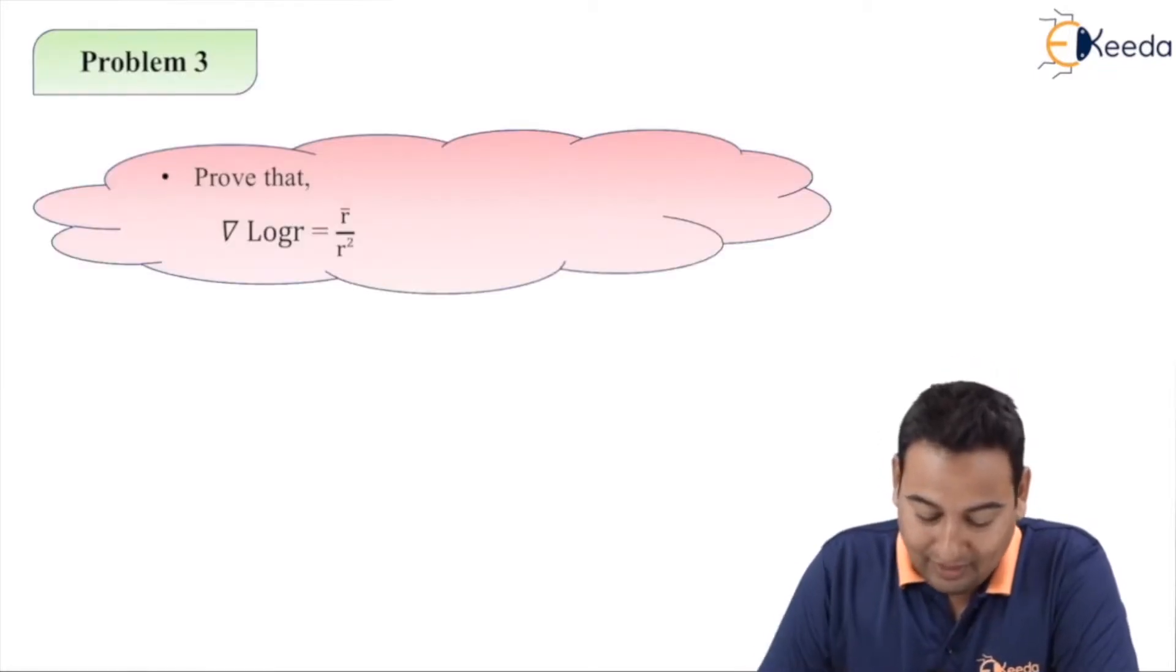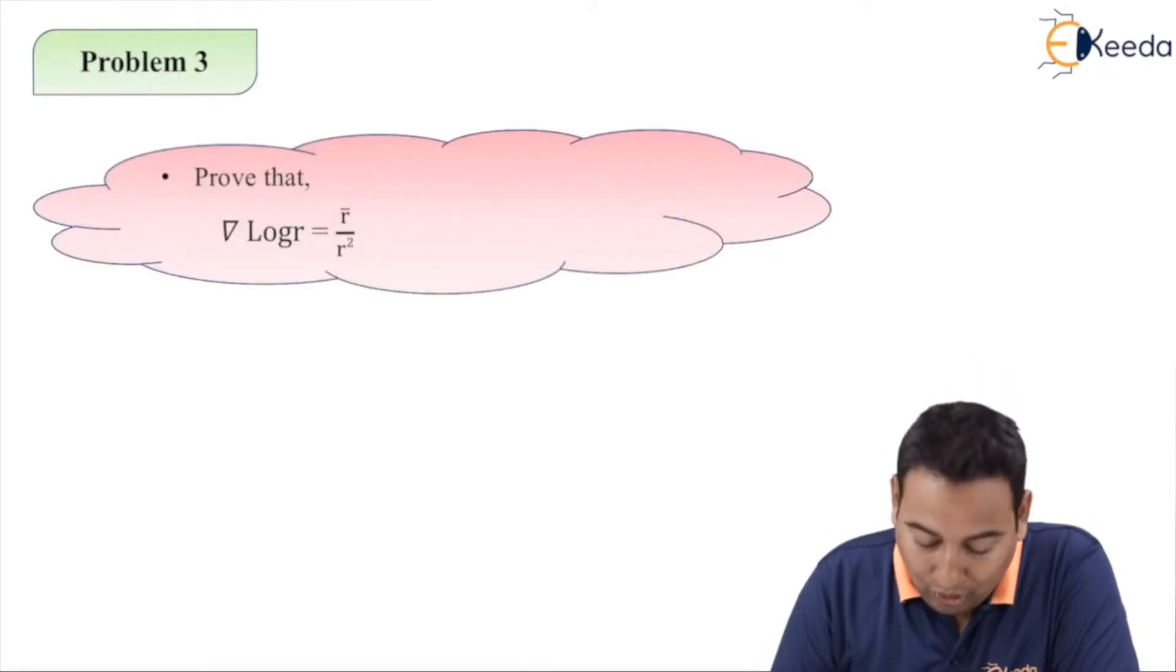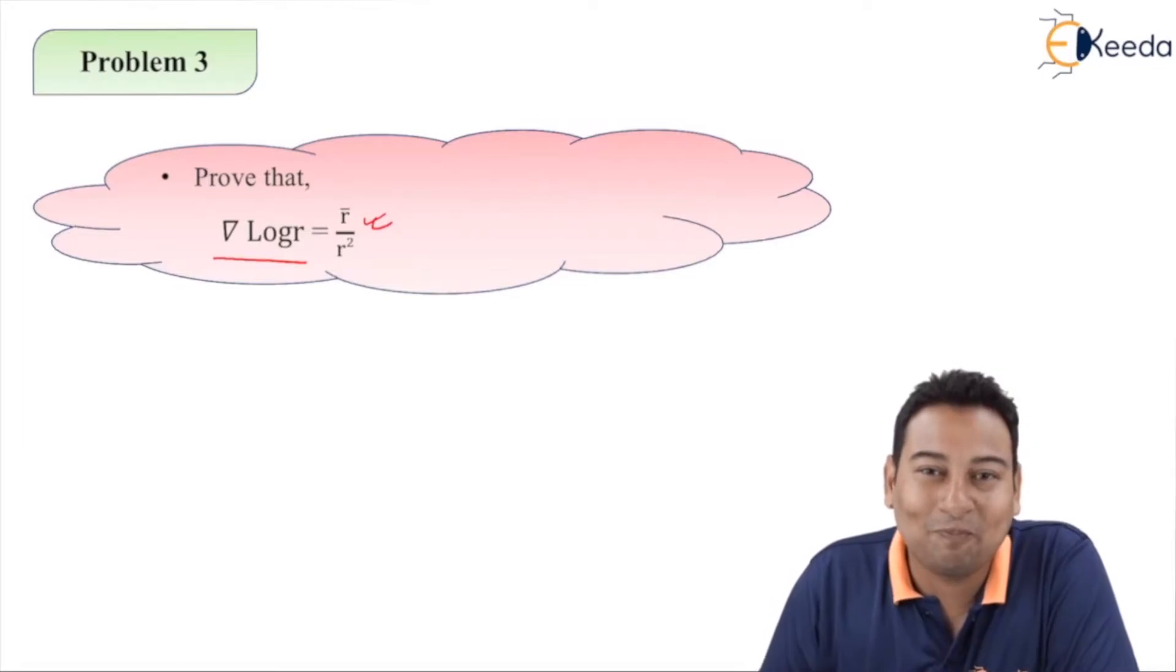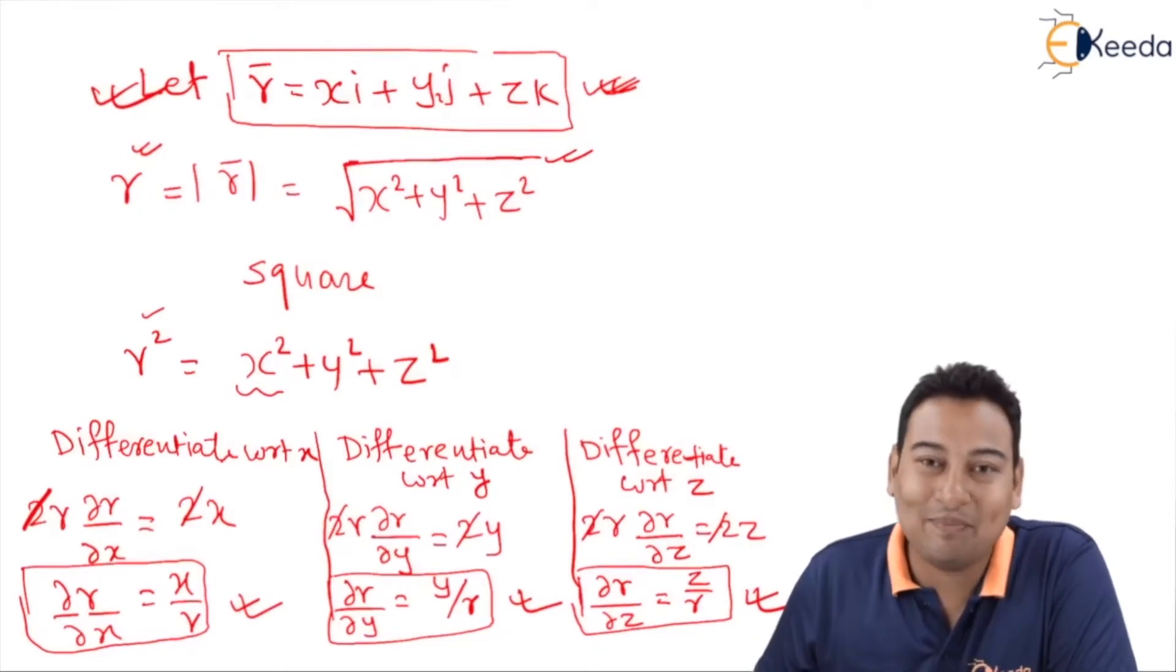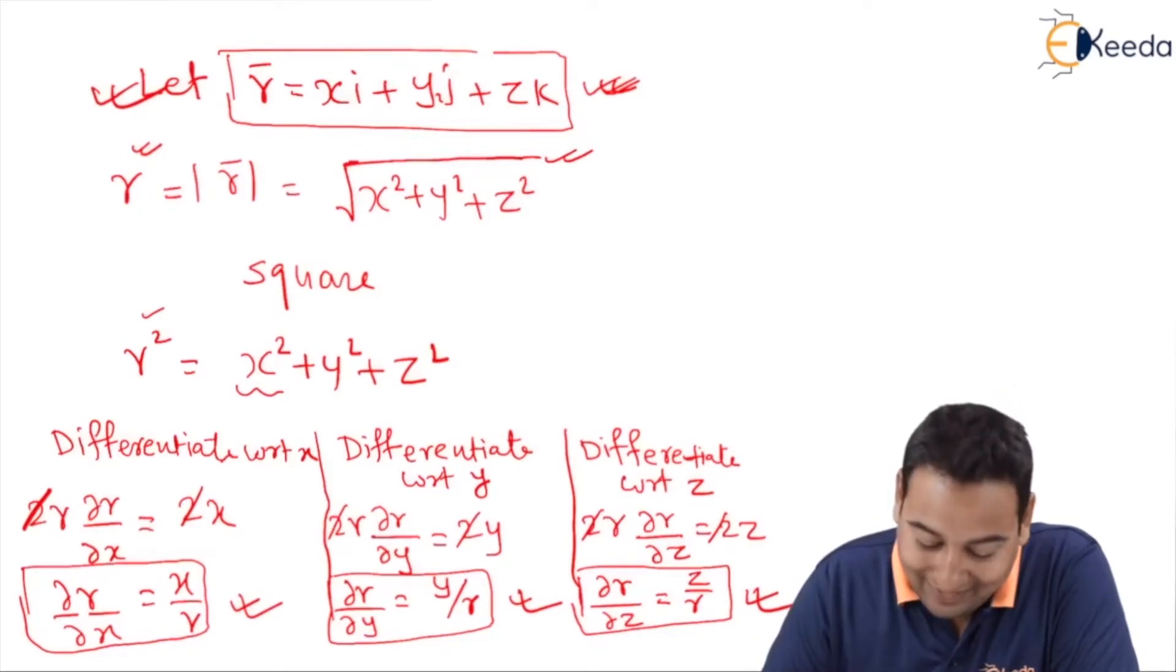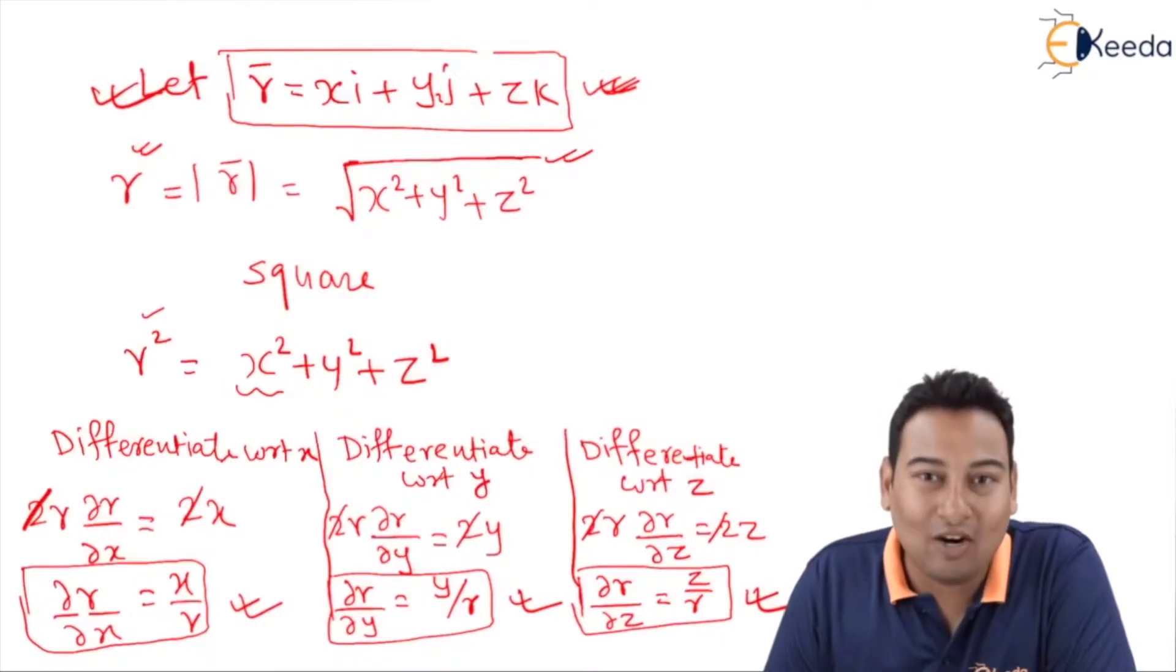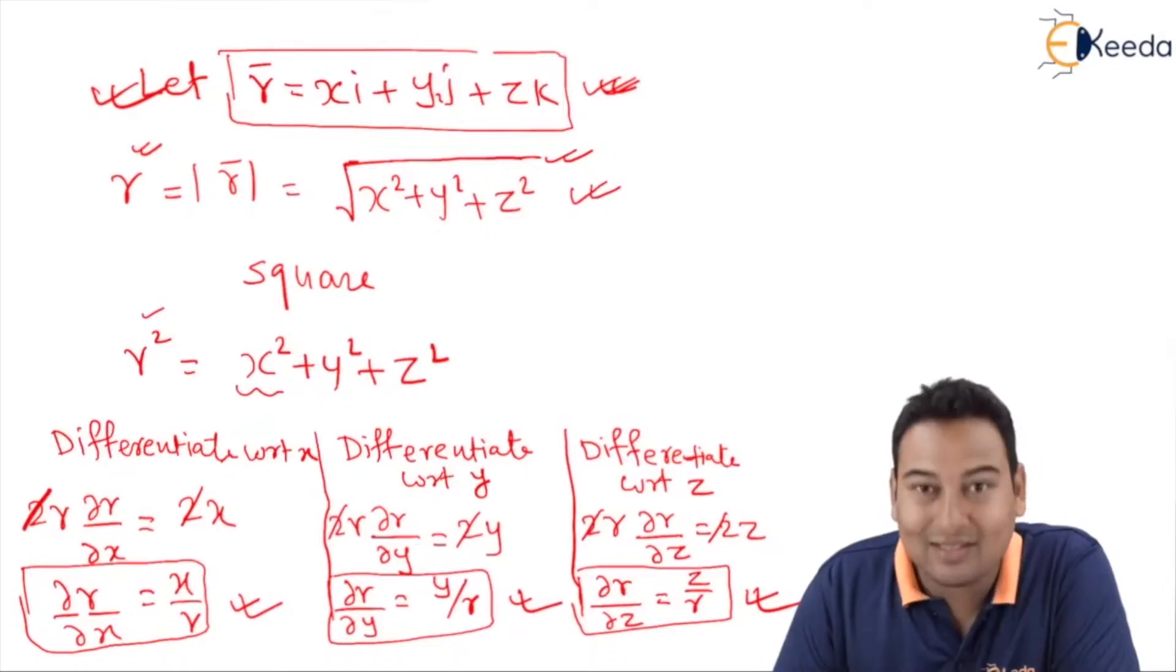Here we need to prove del log r is equal to r bar upon r square. Again, r bar - same story - what is r bar? r bar is xi plus yj plus zk. Then what next? We need to take its mod, that is r, that is square root of x square plus y square plus z square.